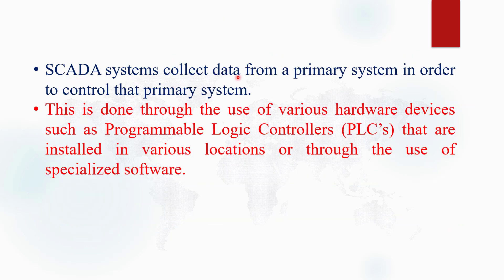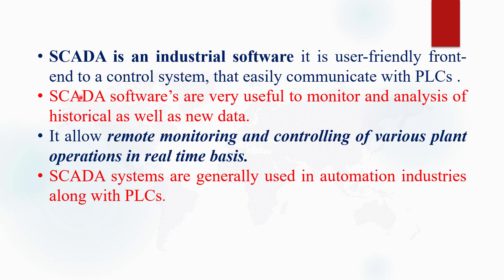SCADA collects or acquires data from the primary elements or primary systems in order to control those elements in the process plant. This is done through the use of various hardware devices such as PLCs — programmable logic controllers — installed at various locations, or through specialized software. In short, SCADA is an industrial software installed in our PC; it is a user-friendly front end that communicates easily with PLCs. SCADA software is very useful to monitor and analyze historical as well as new data.